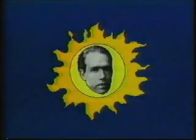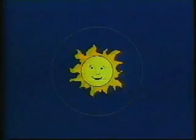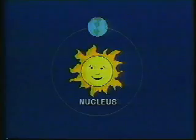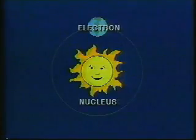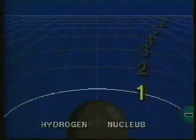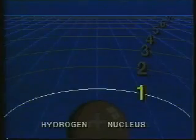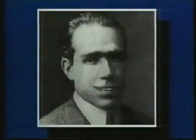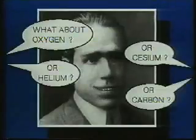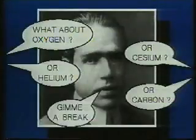It was Niels Bohr who discovered that the laws of physics which govern the motion and behavior of large bodies were not adequate to account for the motion of tiny particles such as atoms and electrons. With his model, Bohr could explain the behavior of atoms with one electron, but he could not predict the radiation spectrum observed for other more complex atoms.